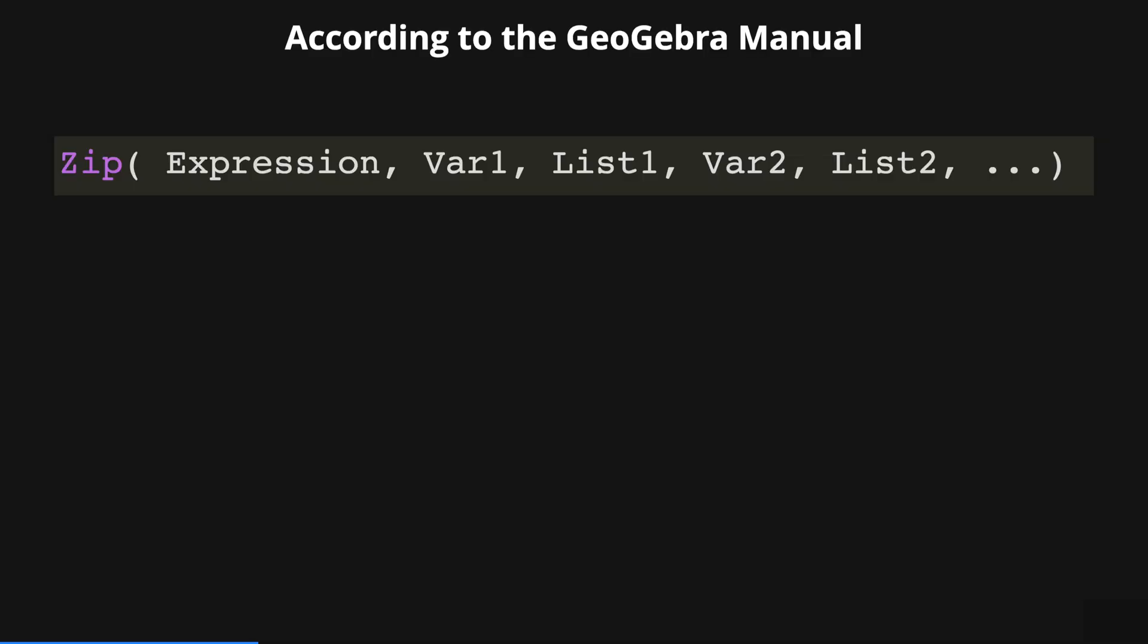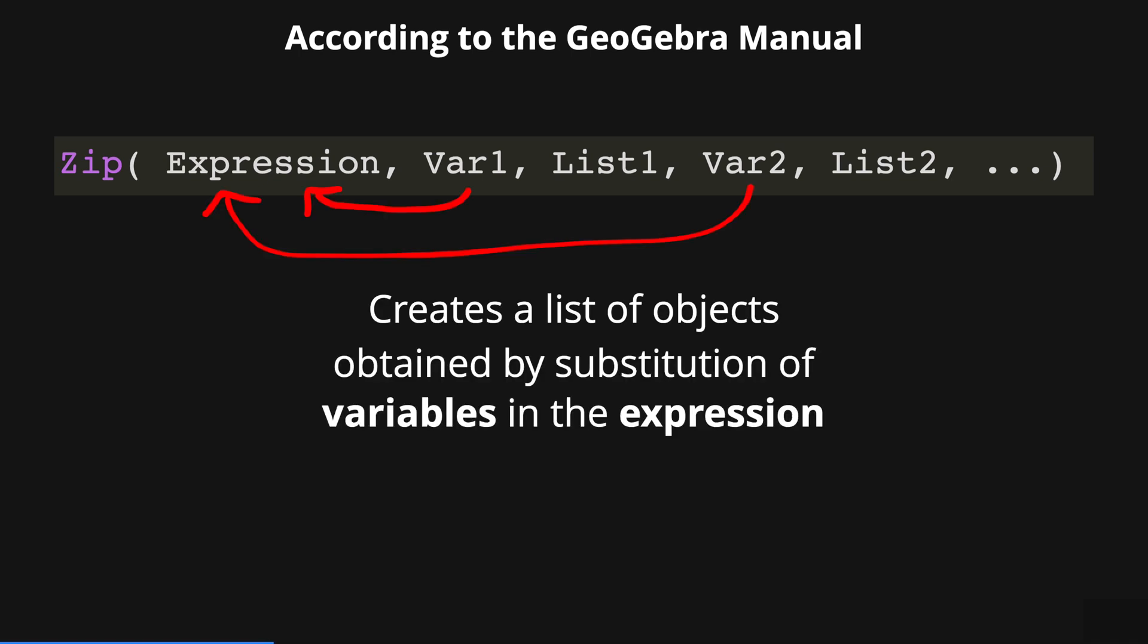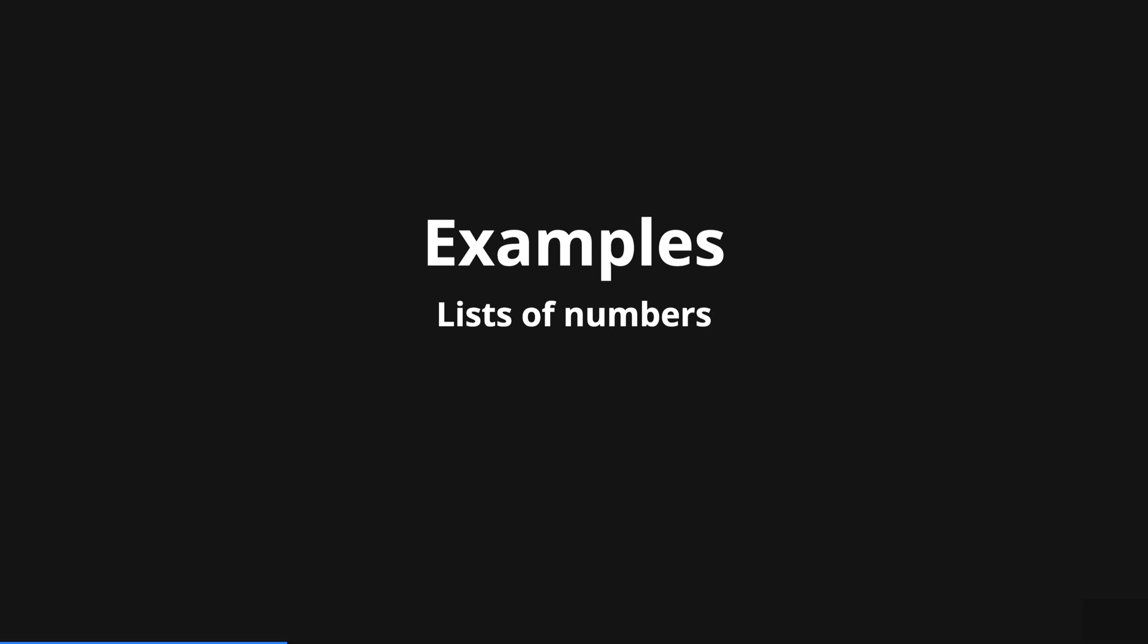According to the GeoGebra manual the zip command creates a list of objects obtained by substitution of variables in the expression by elements of the corresponding list. To make sense of this definition let's explore a few examples starting with lists of numbers.